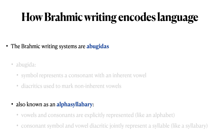Another term that you may hear — this term is used in our textbook in Chapter 3 — is an alpha-syllabary. The concept of an abugida is very closely related to an alpha-syllabary, and the Brahmic systems can be correctly described as abugidas and as alpha-syllabaries.